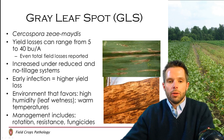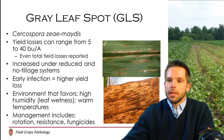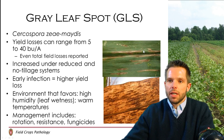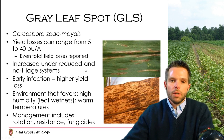Management for gray leaf spot would include rotation, resistance, and also fungicides. You can see the symptoms in these photographs — this is a blockier type lesion which is vein-delimited, stuck between the veins, and typically has very square ends to the lesion, making it much different in terms of symptoms from northern corn leaf blight.